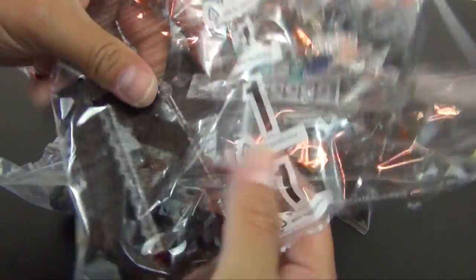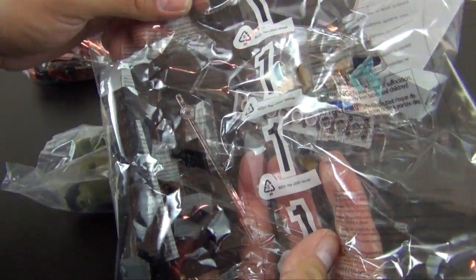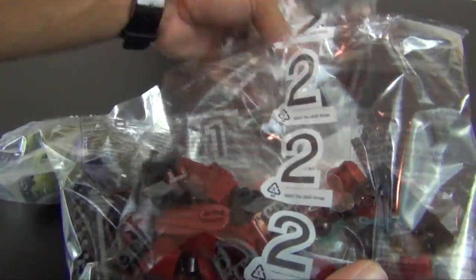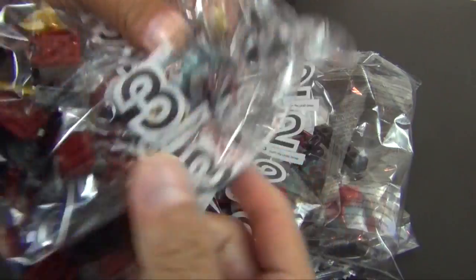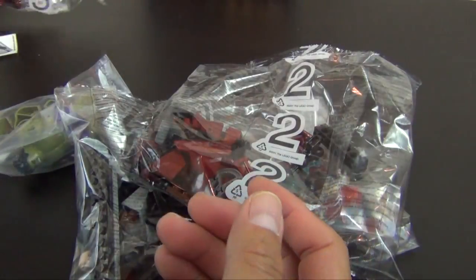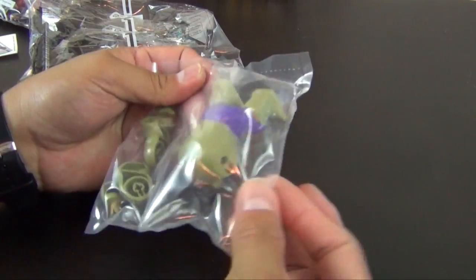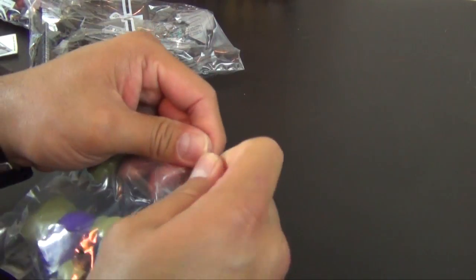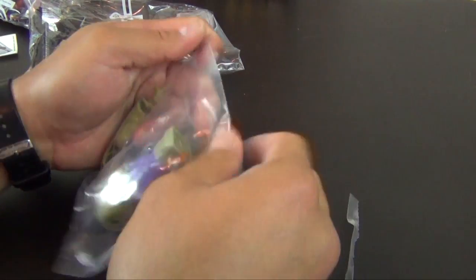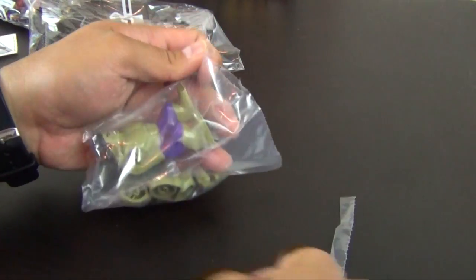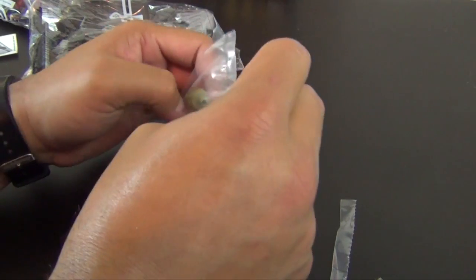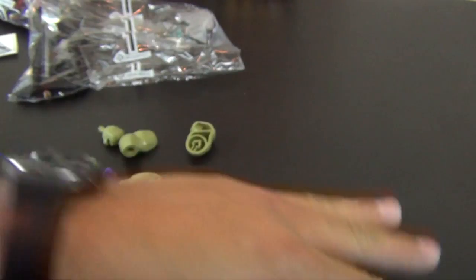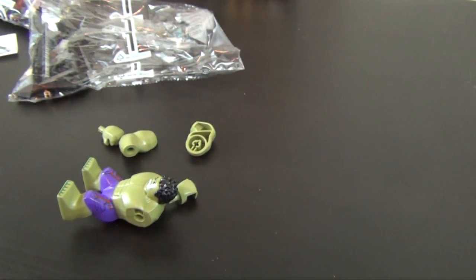All right, so we have numbered bags. We have bag one which looks like it has about twenty pieces in it. We have bag two that looks like it may have a hundred, and bag three which looks like it may have a hundred and fifty. And then we have a separate bag that has all of the Hulk pieces in it. Let's open this bag now because we're going to go ahead and build Hulk with all the parts from bag one as well.